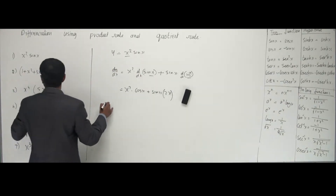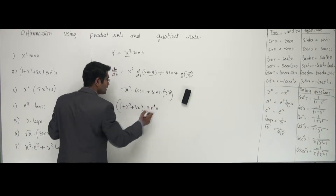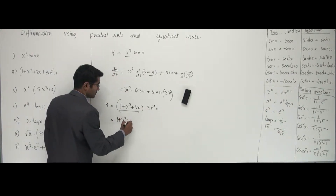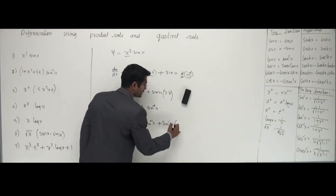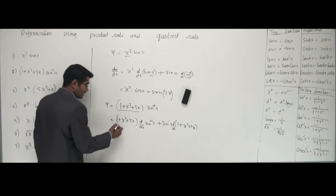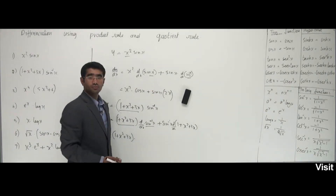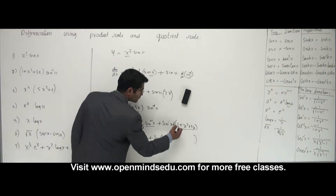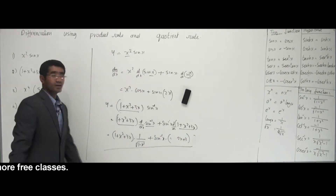Let's go with the second one: y = (1 + x² + 3x) · sin⁻¹(x). I take the whole polynomial as the first function and sin⁻¹(x) as the second. So dy/dx = (1 + x² + 3x) · d/dx[sin⁻¹(x)] + sin⁻¹(x) · d/dx[1 + x² + 3x]. The derivative of sin⁻¹(x) is 1/√(1 - x²), and differentiating 1 + x² + 3x gives 2x + 3. That's your answer.